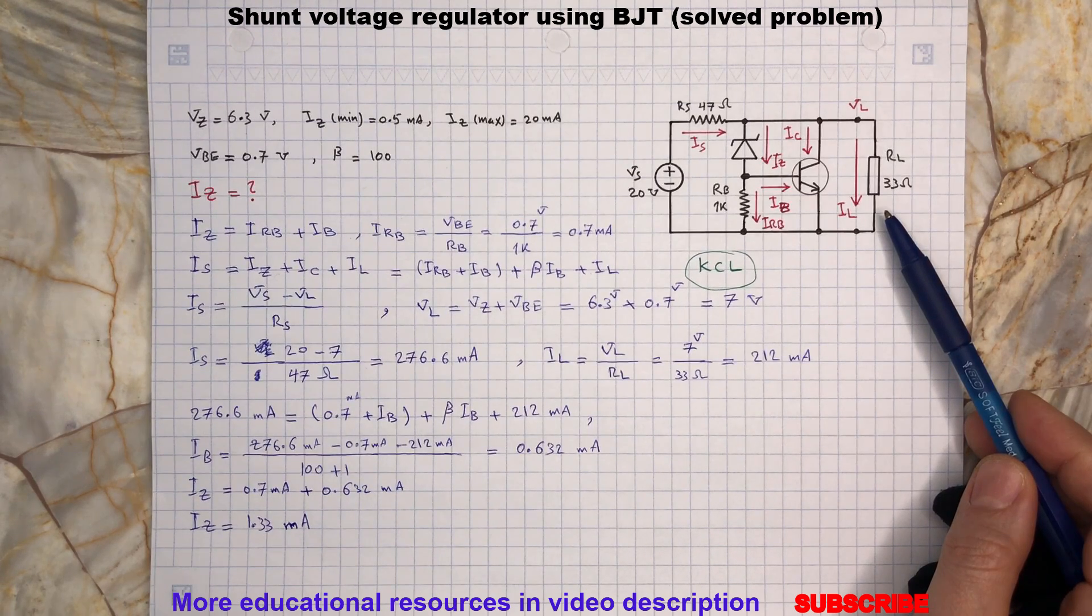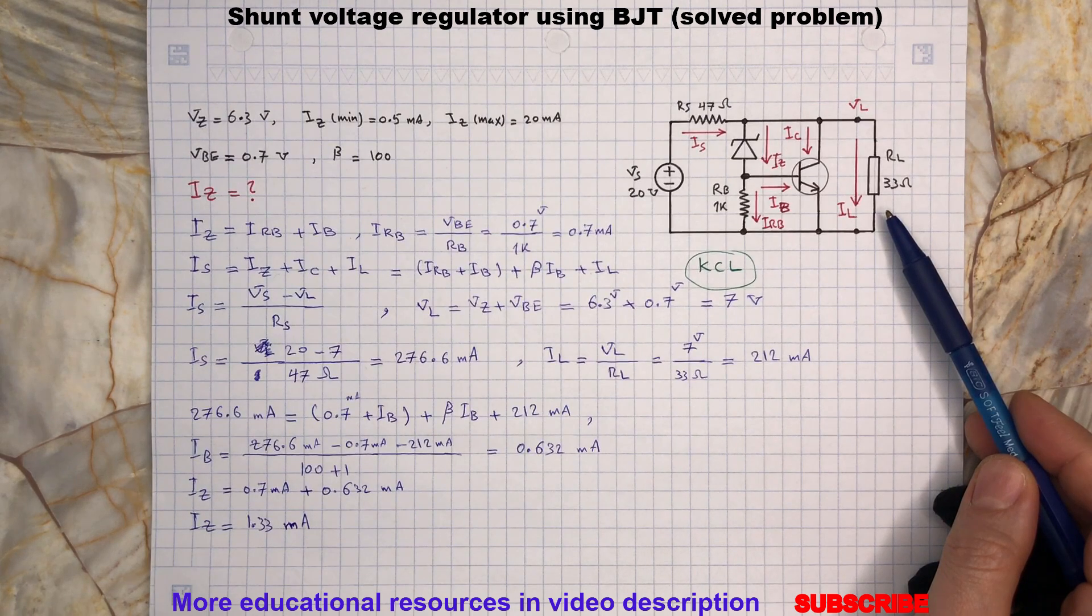On the other hand, a larger load resistance will lead to a lower load current. Therefore, since IAS is constant...